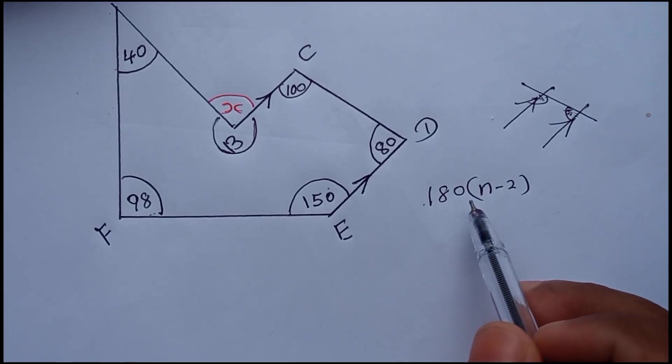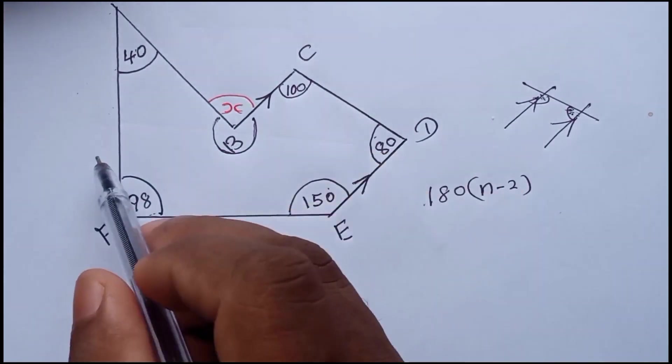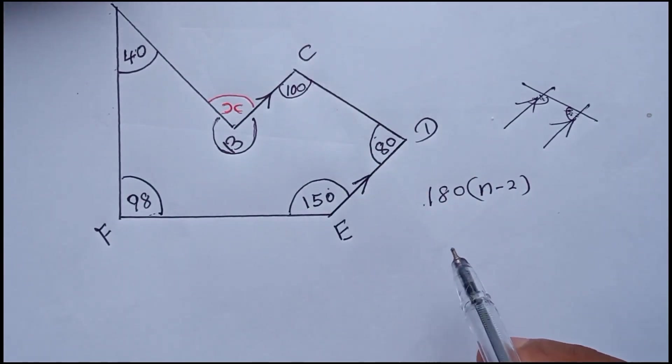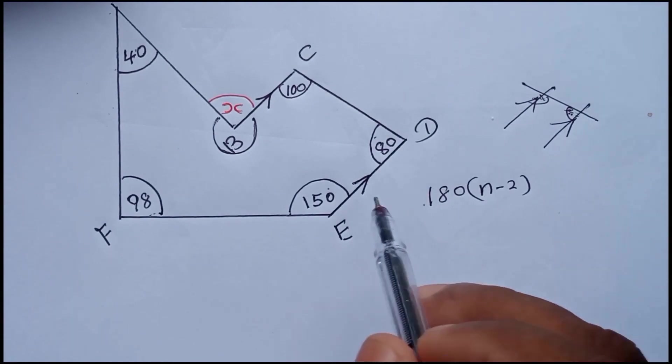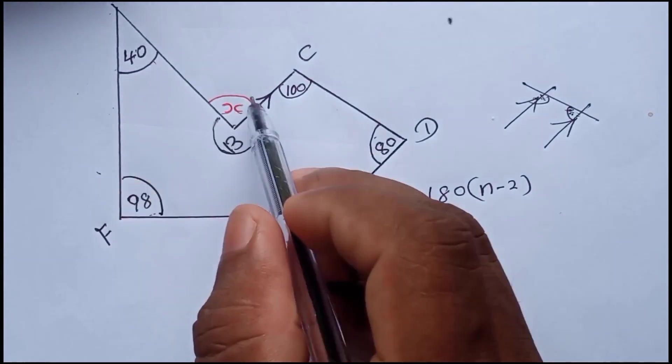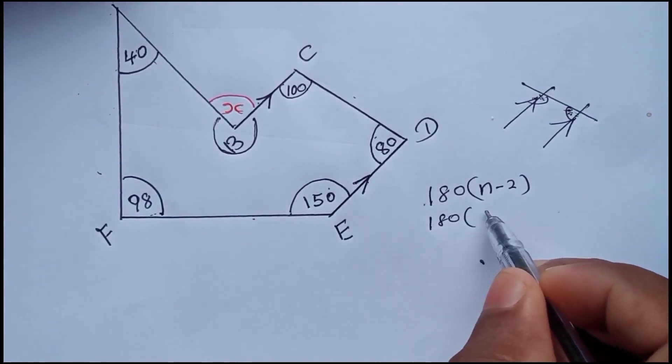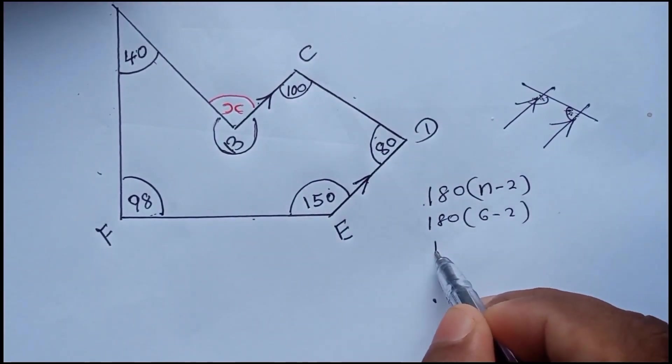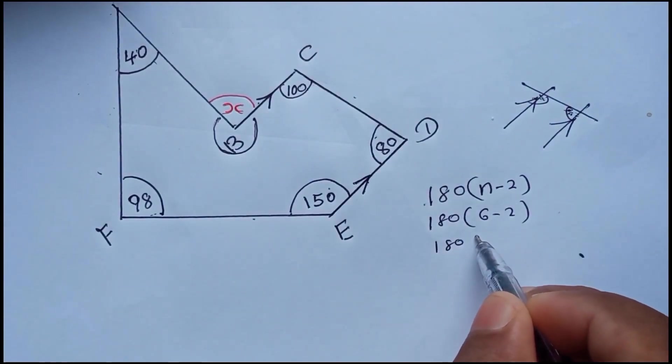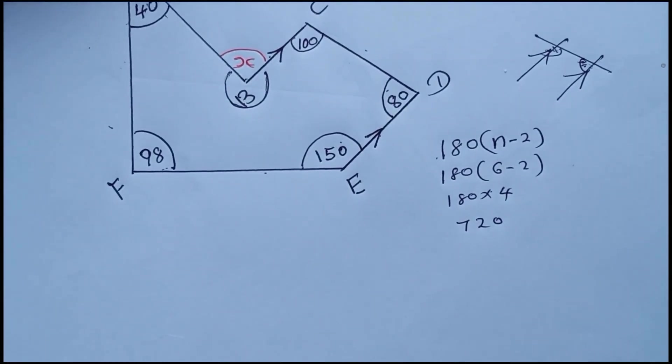This all together, how much you can find. Here n represents the number of sides, right, how many sides you have. So one, two, three, four, five, six. So here 180 times 6 minus 2, that means 180 into 4, that means it will be 720.